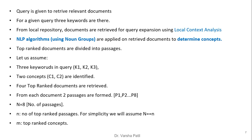Now this is explained with a simple example covering steps one, two, and three. Assume a query is given to retrieve relevant documents. Three keywords are present in the query. From a local repository, documents are retrieved for query expansion using local context analysis. NLP algorithms are applied using the noun groups present in the passages to retrieve concepts from those documents. Top-ranked documents are divided into passages. Assume the query has three keywords: k1, k2, and k3. Two concepts c1 and c2 are identified using NLP algorithms working on noun groups.